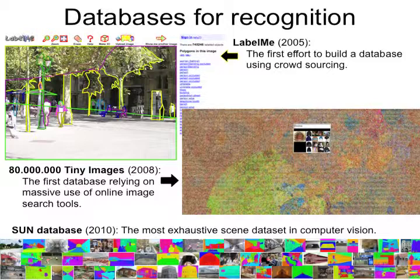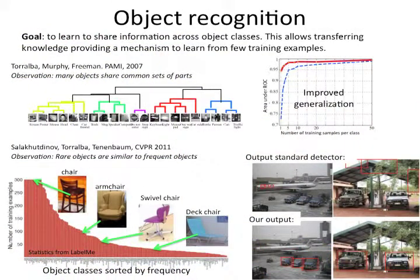A few years later we decided we were making so much progress, let's try to do everything. We collected a huge database by going through an electronic dictionary, taking all the English words, and then going to Google and downloading images corresponding to all those words. We had those processes running for a year — Google didn't shut us down, well eventually they did.